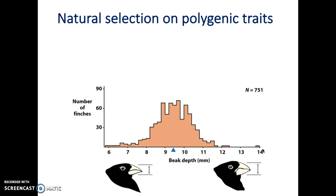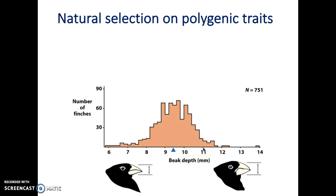For each beak depth value — 6, 7, 8, 9, 9.3, 9.5, 9.7, and so on — you have a number of finches with that corresponding beak depth, or a percentage. In this picture we have the number of finches. For example, how many finches have a beak depth of 11? If you look up, it's about 10. This picture shows you the distribution of this polygenic trait within the population.